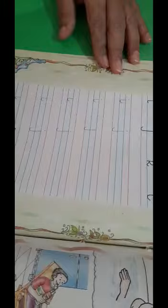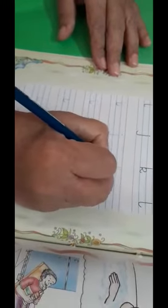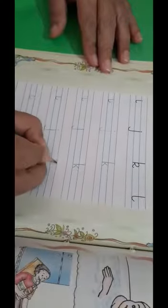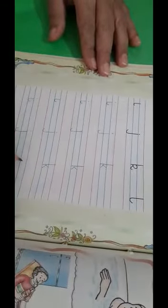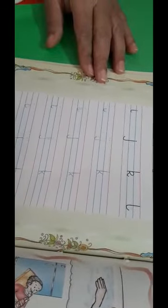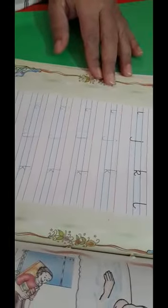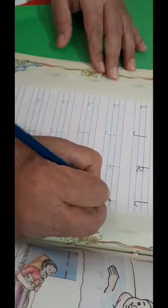J Joker and K Kite. This is K Kite. And these two slanting lines will come between these blue lines.